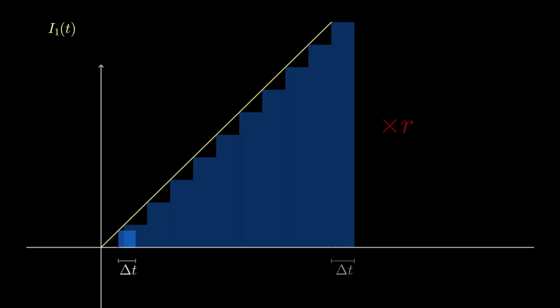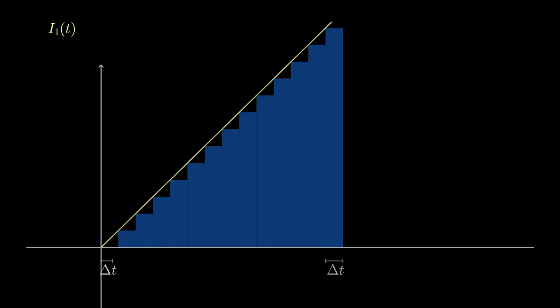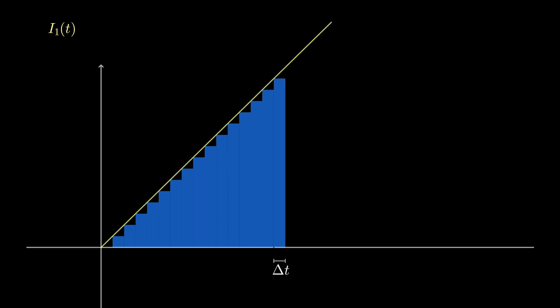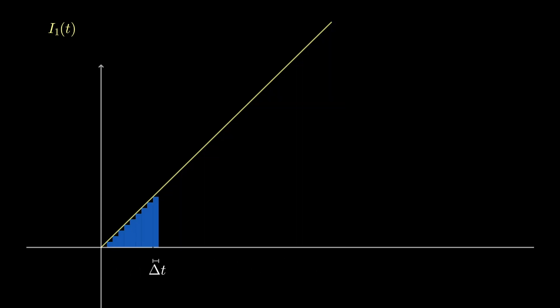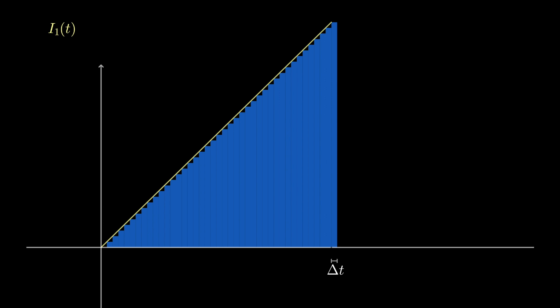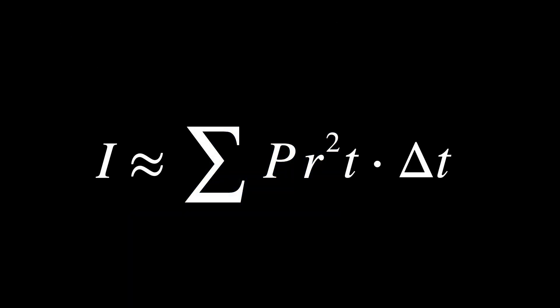If we want a better approximation, we make the time interval smaller. By shrinking the time interval to an infinitesimal amount, dt, the total interest becomes an integral.